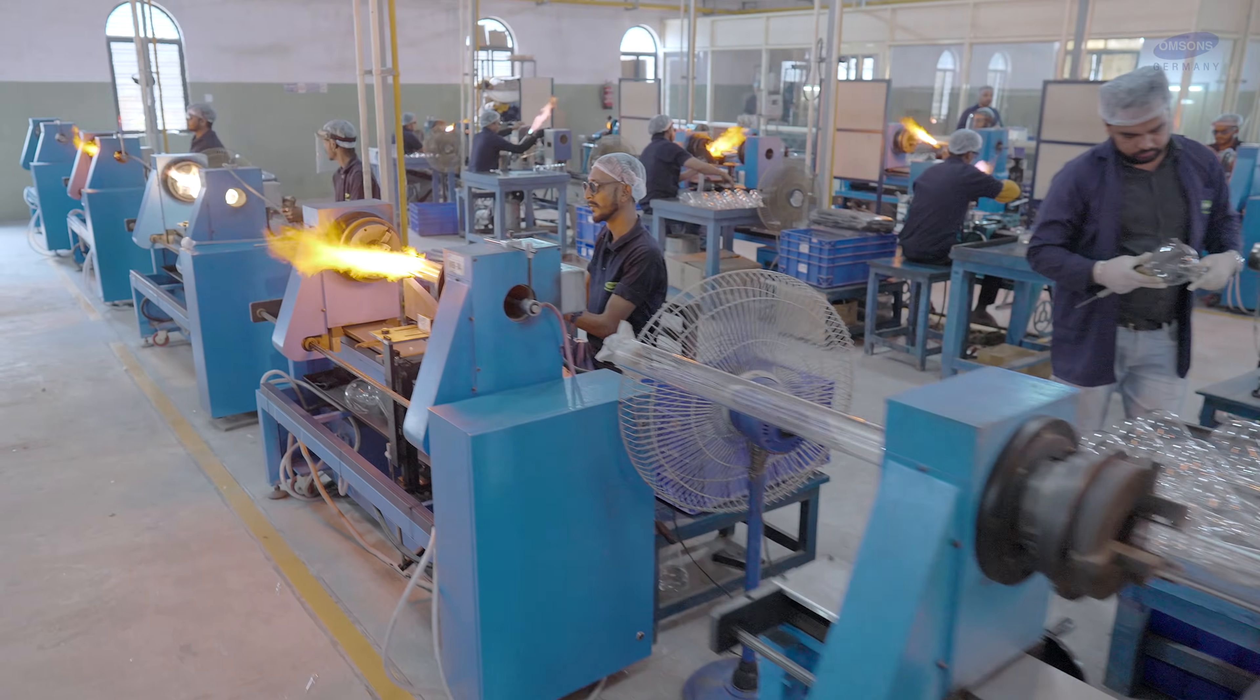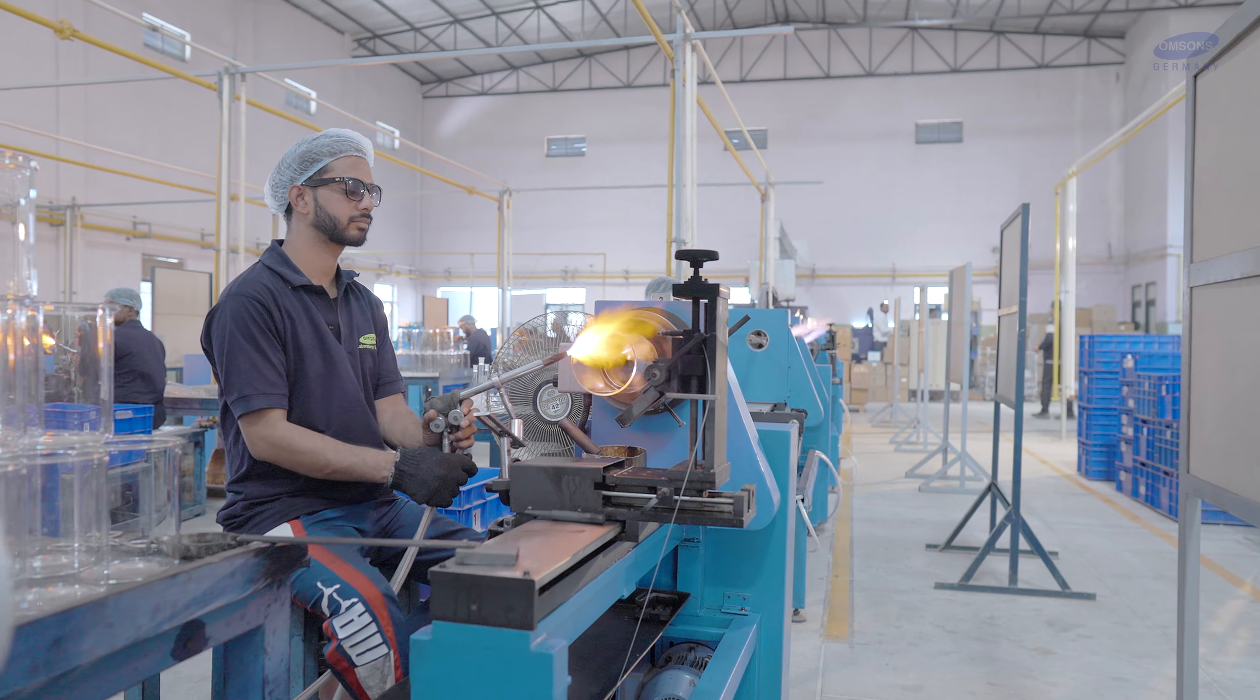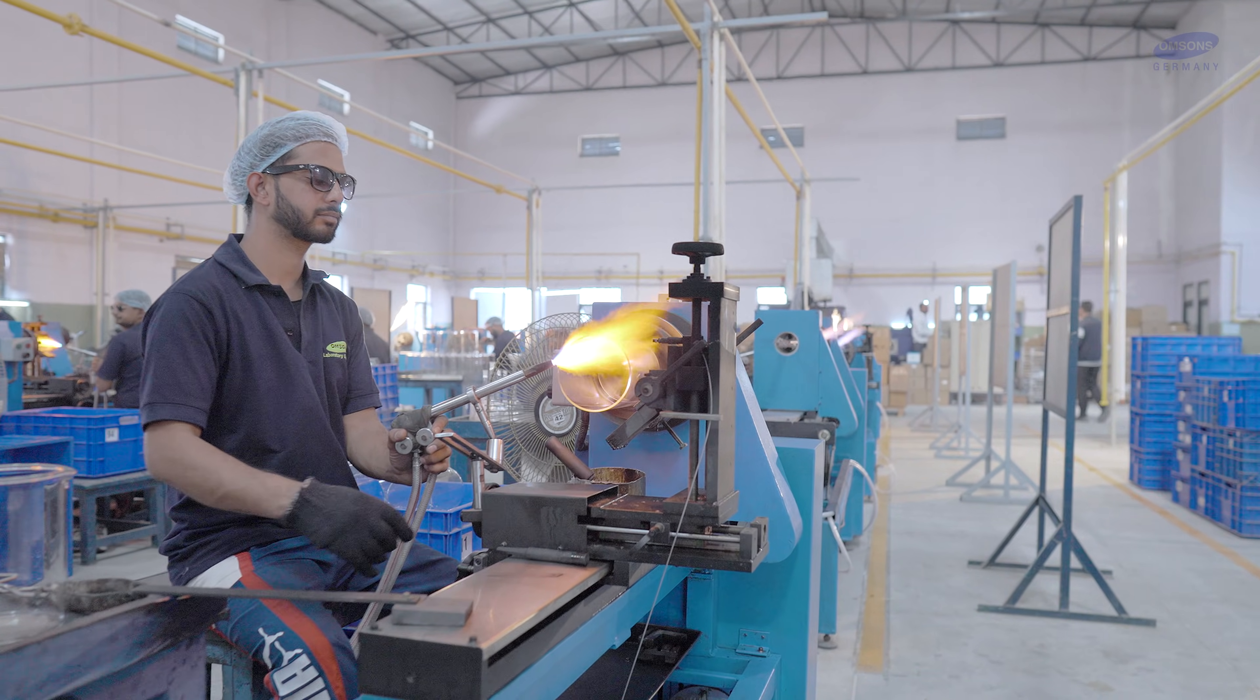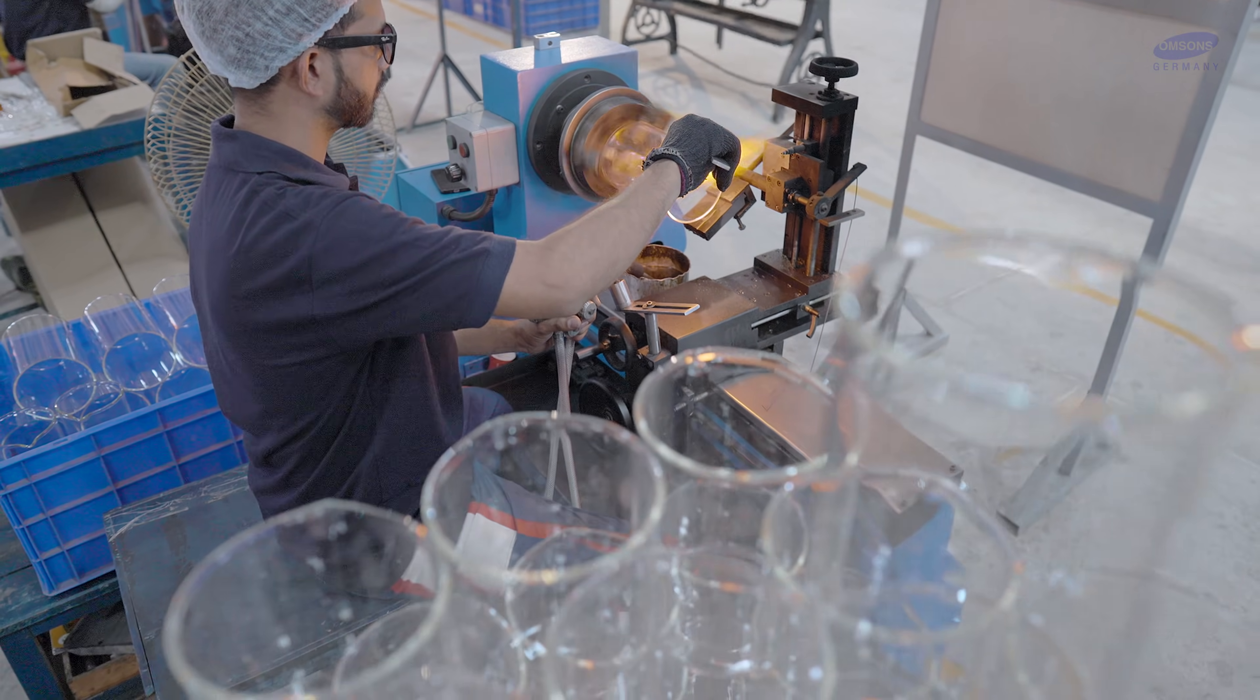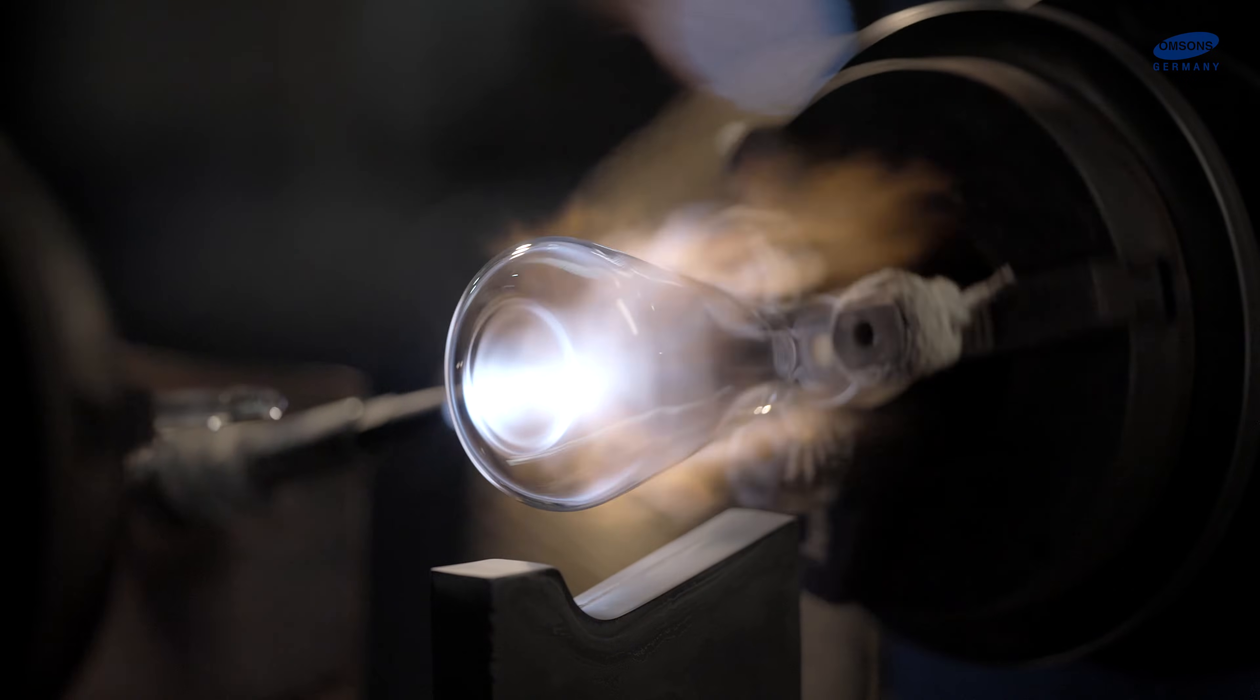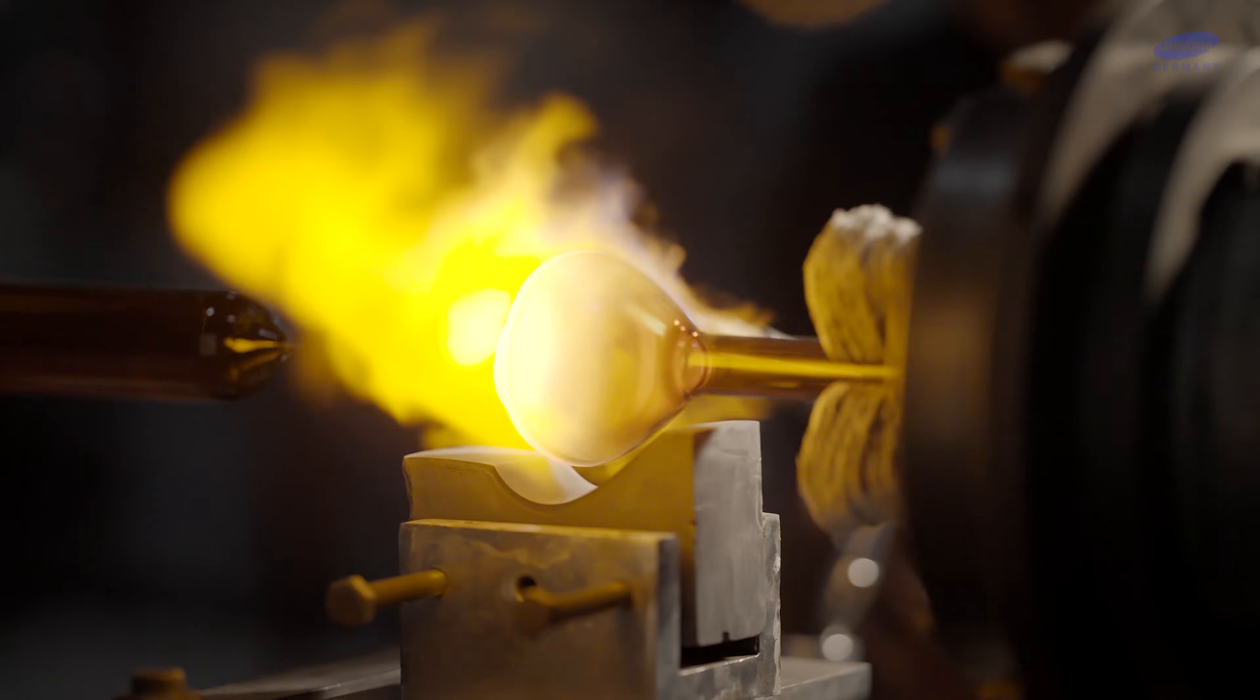Our lathe machines ensure high precision in the production of glassware ranging from 1 millimeter to 10,000 millimeters of different shapes and sizes, such as Erlenmeyer flasks, round bottom flasks, volumetric flasks, etc.